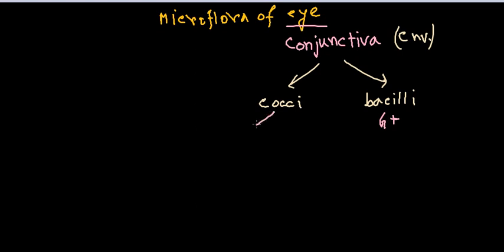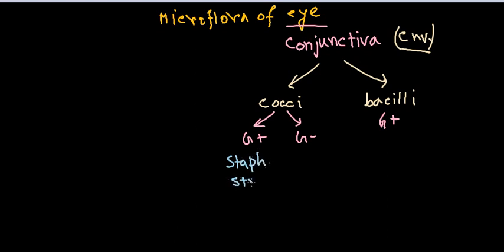So we have two types of cocci — gram-positive and gram-negative — but gram-positive cocci and gram-positive bacilli are very common, while gram-negative cocci are a kind of rare species. Among the gram-positive cocci we have Staphylococcus and Streptococcus, and among the Staphylococcus we have Staphylococcus aureus and Staphylococcus epidermidis species in most cases.